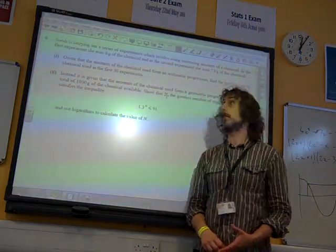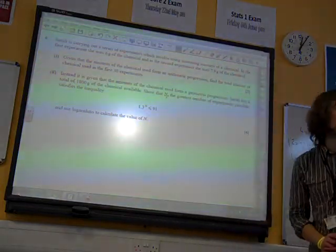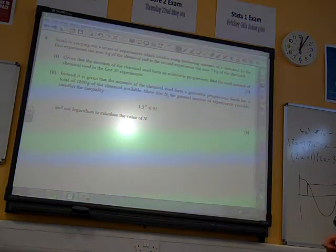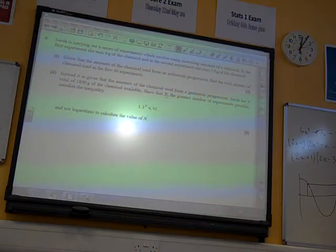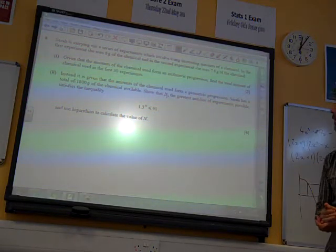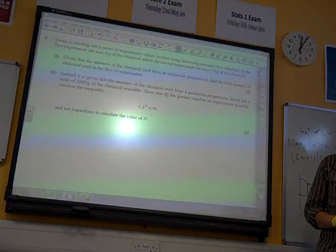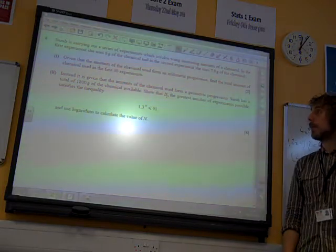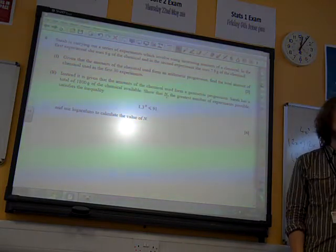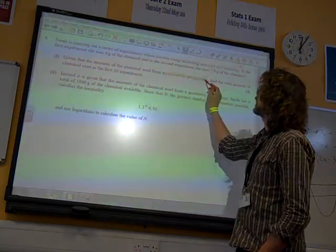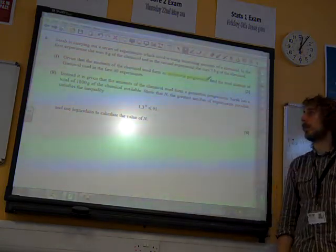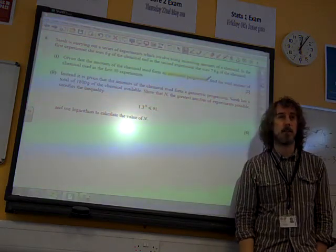Question 6. Sarah is carrying out a series of experiments which involve using increasing amounts of a chemical. In the first experiment she uses 6 grams of the chemical and the second she uses 7.8. Given that the amount of chemicals used forms an arithmetic progression, find the total amount of the chemical used in the first 30 experiments.